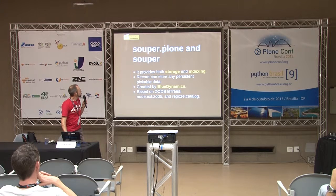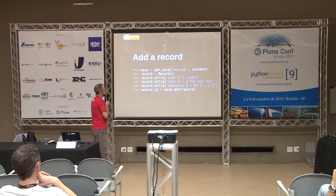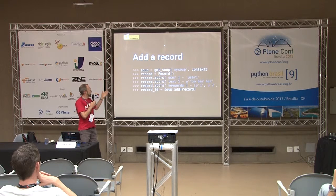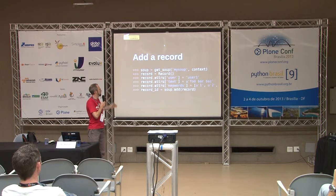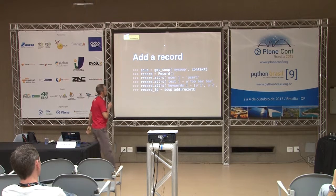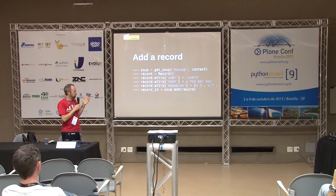Let me introduce Soup. It's quite straightforward to use. You can create a Soup — a Soup is a container for records. You can create as many Soup containers as you want in your Plone. You create a Soup, then you create a record and set attributes. You can store anything that is picklable into records. You store it with 'soup.add(record)' and you're done.